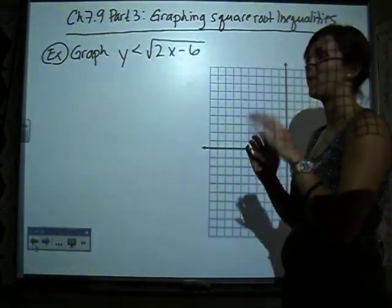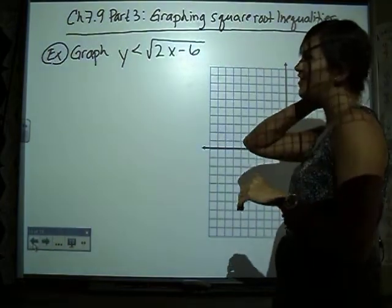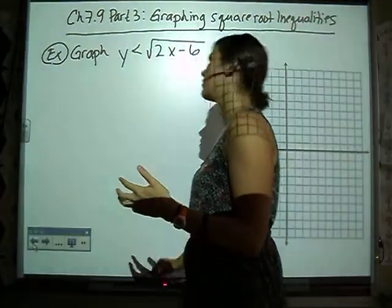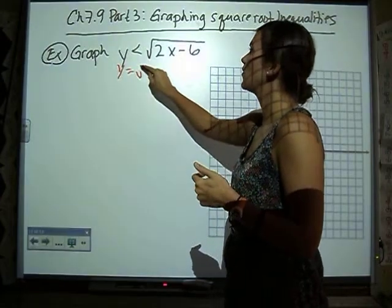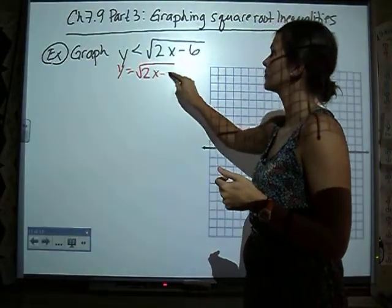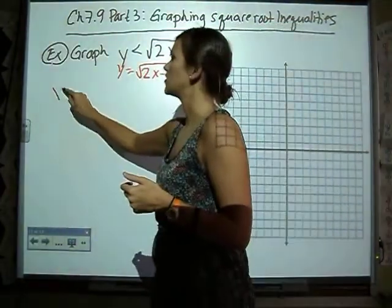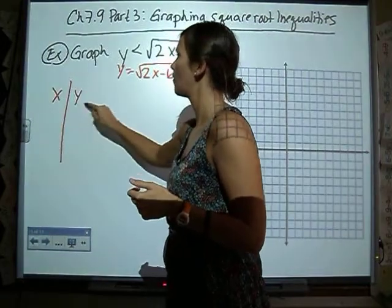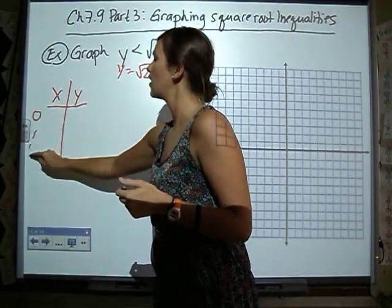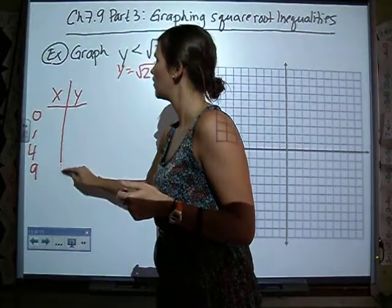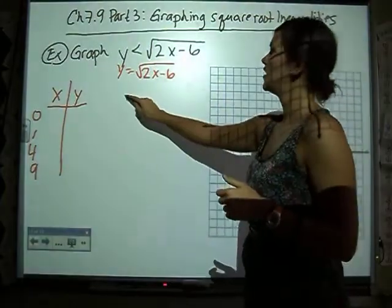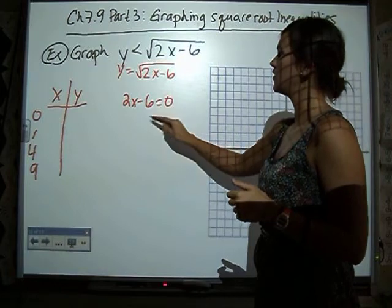Okay, so let's jump in. We're going to graph it the same way. Remember, we always start graphing inequalities by graphing the equation. So we're going to start by making our table, and we're looking for our square root to be those wonderful, nice numbers. So if we let 2x minus 6 equal 0,